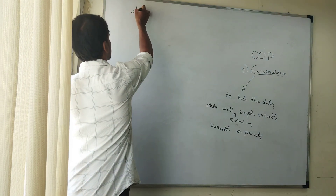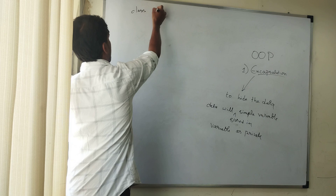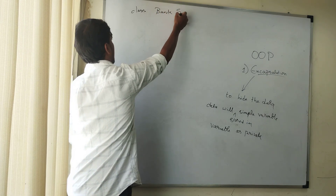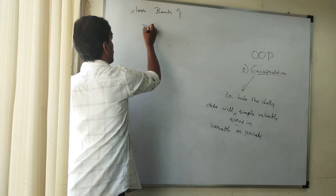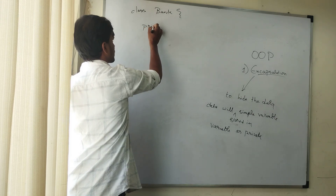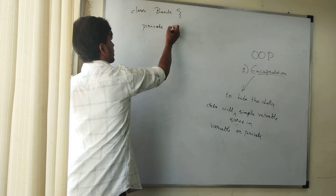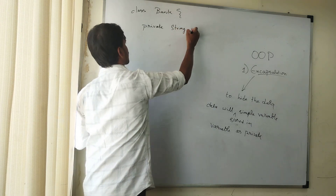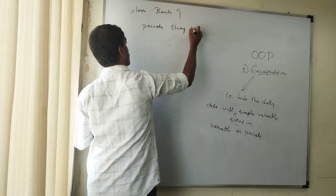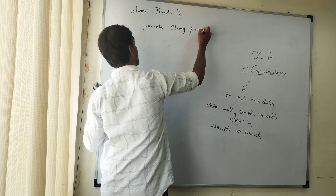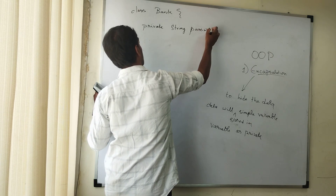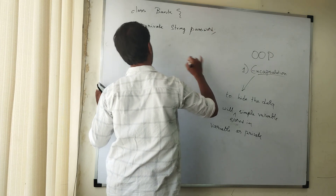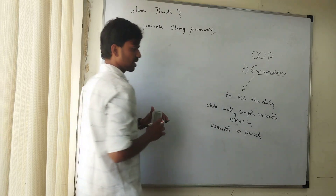We will be creating a class called 'bank'. Here I will be declaring one variable as private. We will create: private String password. For today I am declaring only one variable, because we can complete it within less space and within less time.